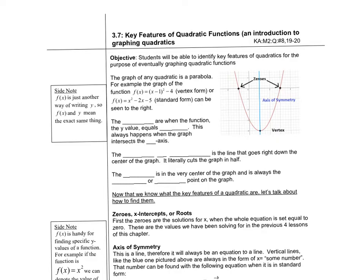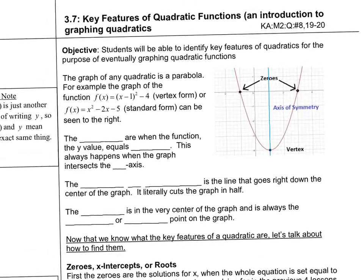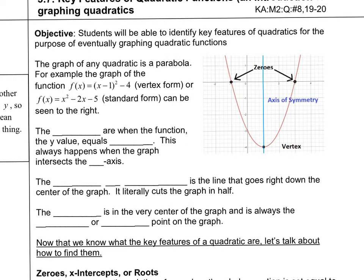The graph of any quadratic is a parabola — that U-type shape that keeps going in either direction, or could be upside down. For example, f(x) = (x − 1)² − 4 is vertex form, and in standard form it would be x² − 2x − 3. These two functions are the exact same function, just different forms.